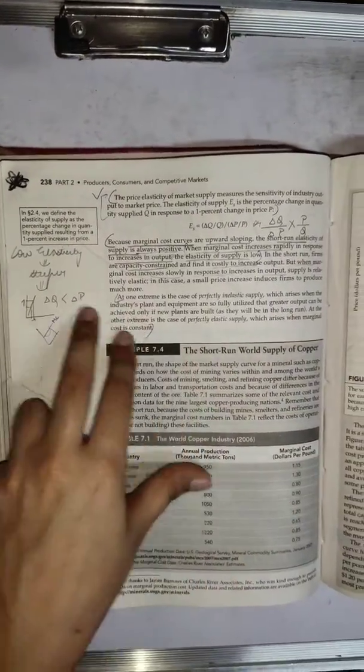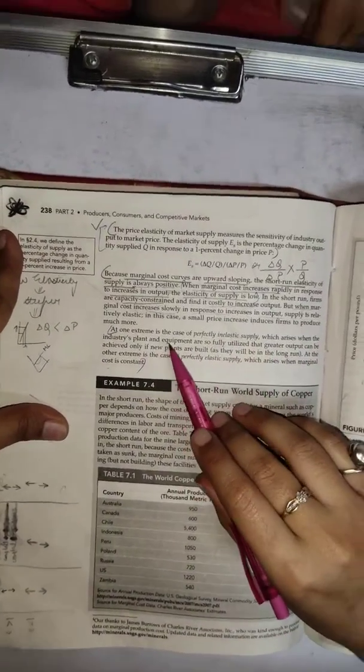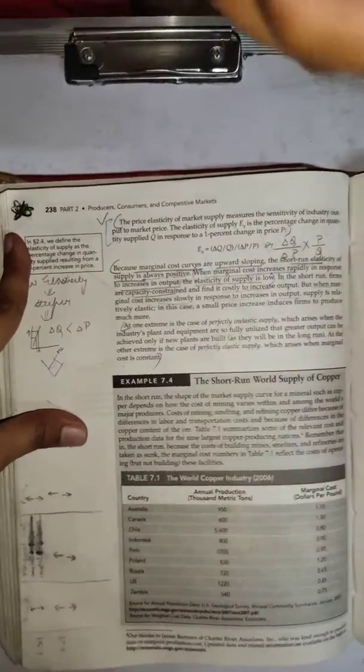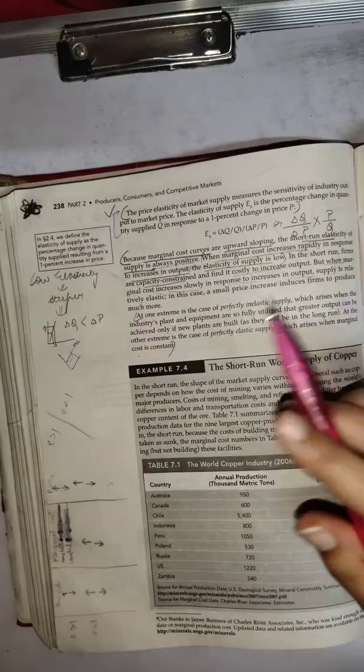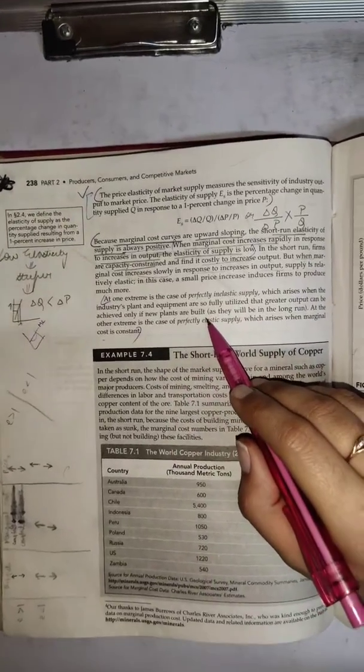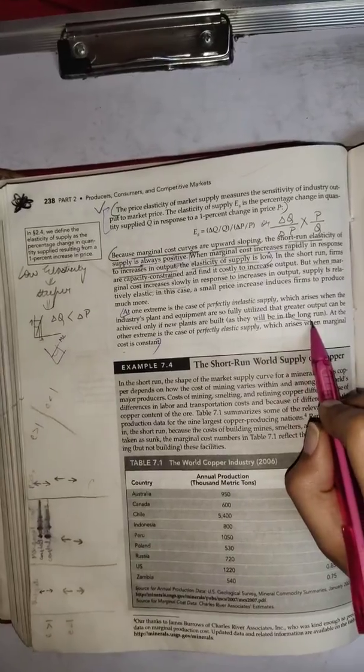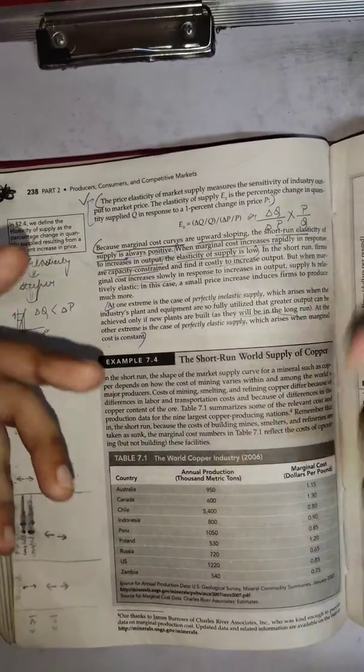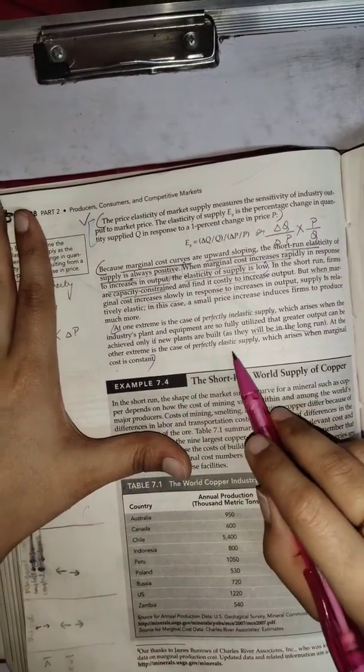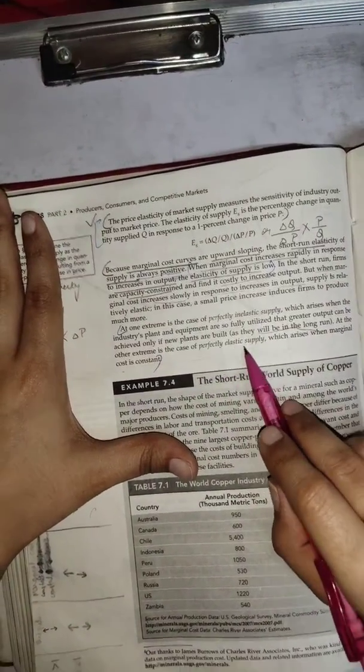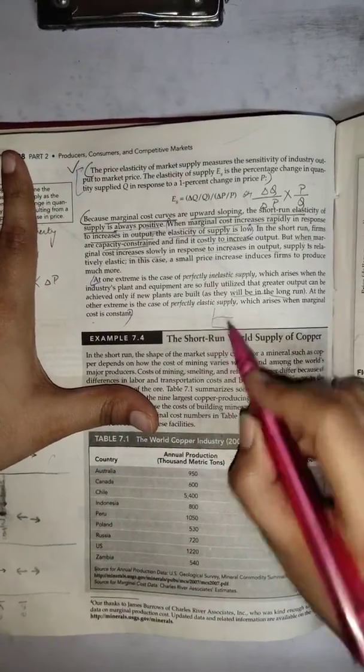At one extreme is the case of perfectly inelastic supply which arises when the industry's plant and equipment are so fully utilized. Greater output, if at all the firm has to achieve, can be achieved only by building new plants as they will be in the long run. Basically if you have to build up new plants, that's only a possibility in the long run. At the other extreme is the case of perfectly elastic supply which arises when marginal cost is constant. That was the horizontal case.